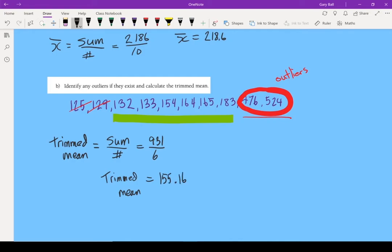If I look at that, that seems to be a whole lot more in line with the numbers I've got. In fact, 155.16 kind of sits right there, which is, in my books, right in the middle of the data.